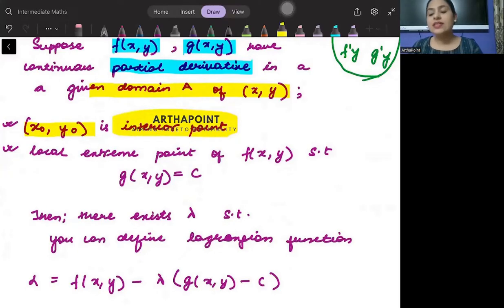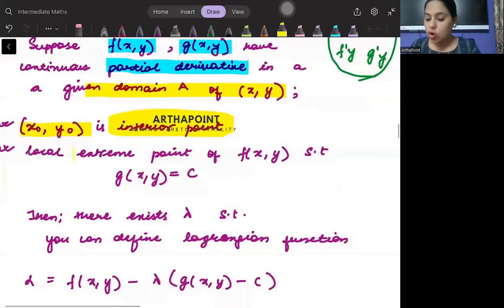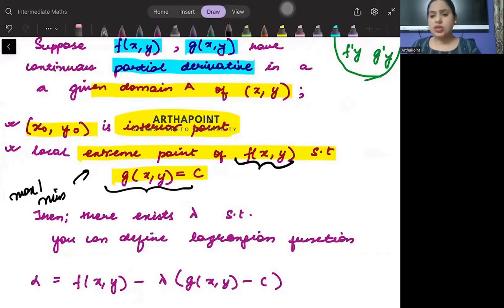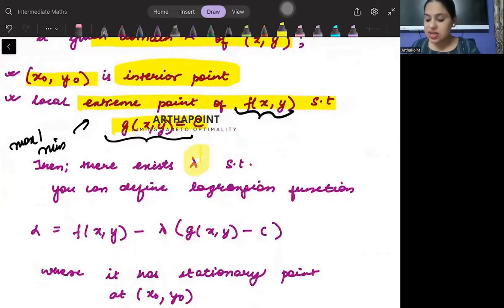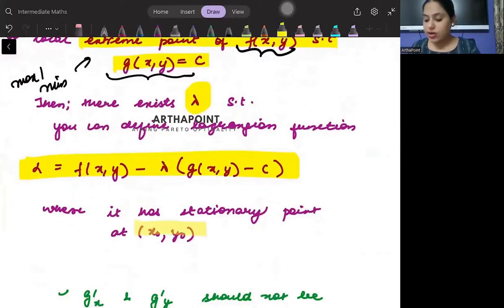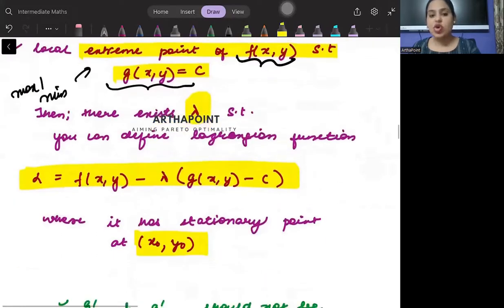Interior point, this (x0, y0) should not be an extreme point. It should be within the domain. Domain ka end point nahi hona chahiye. Domain ke andar hona chahiye. Local extreme point of f(x,y) subject to g(x,y) equals c. It should be maximizing or minimizing my function subject to the constraint. Then there exists a lambda such that lambda can be defined using this Lagrange's function where it has stationary point at (x0, y0).